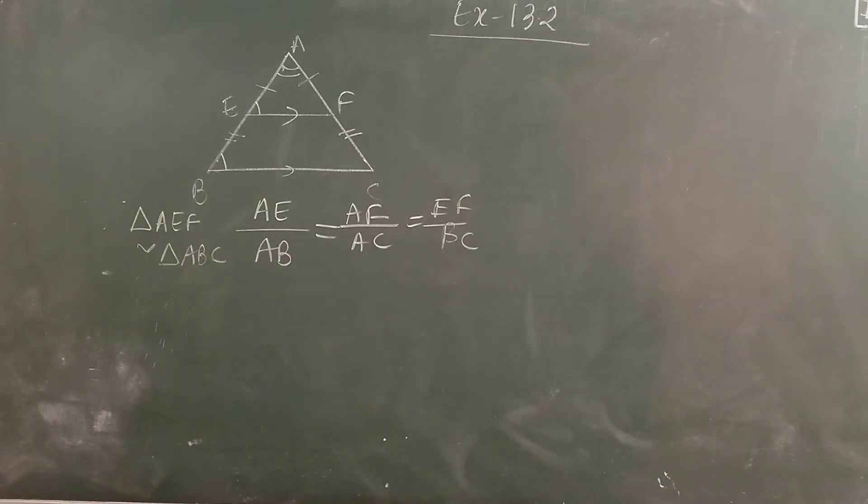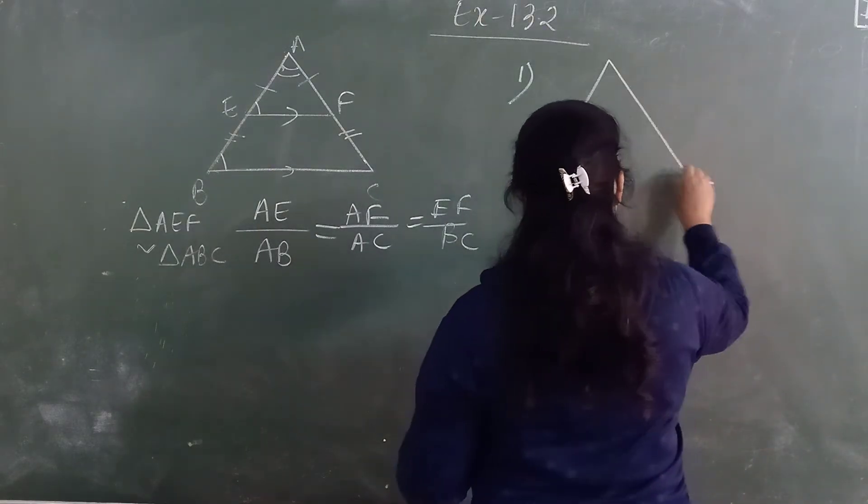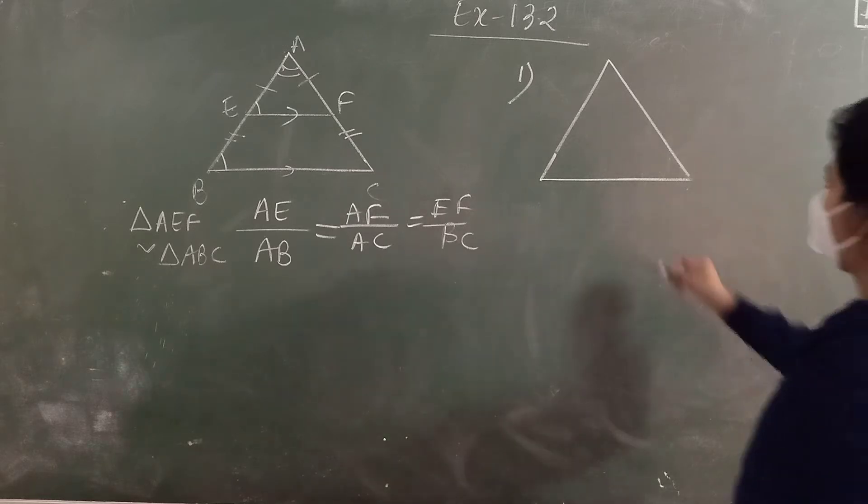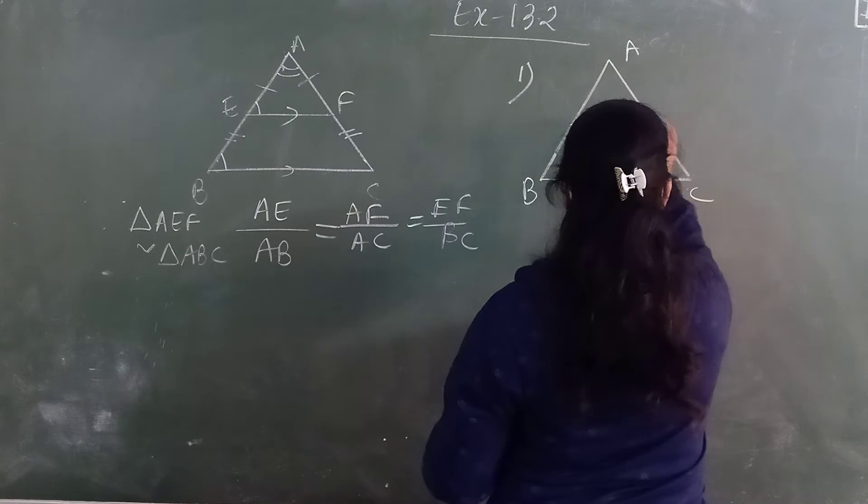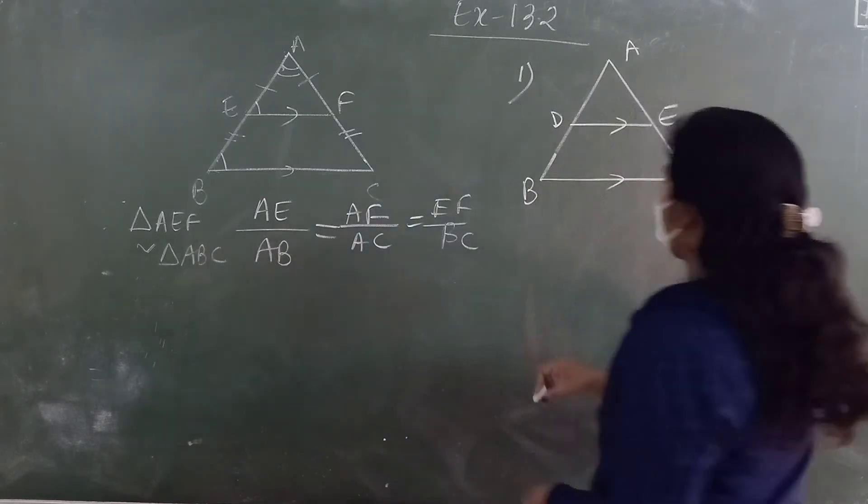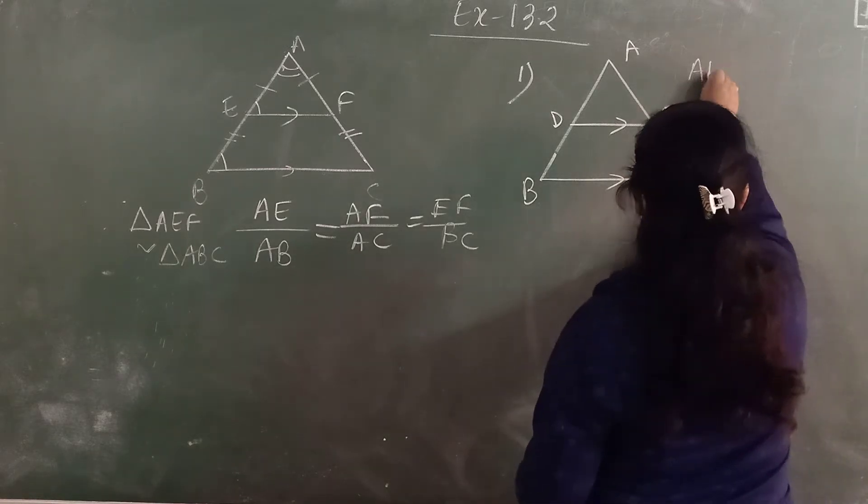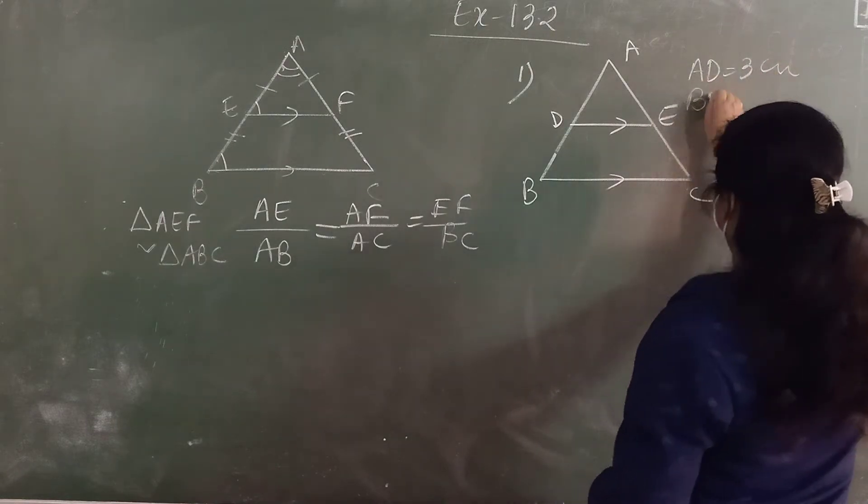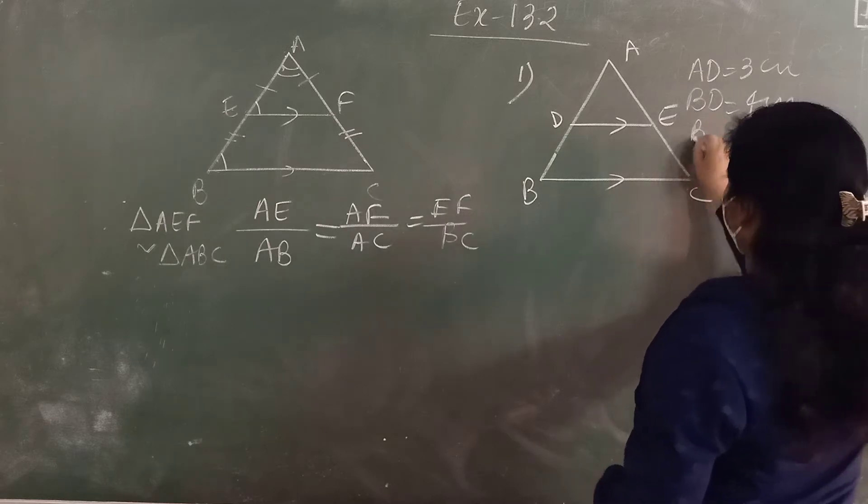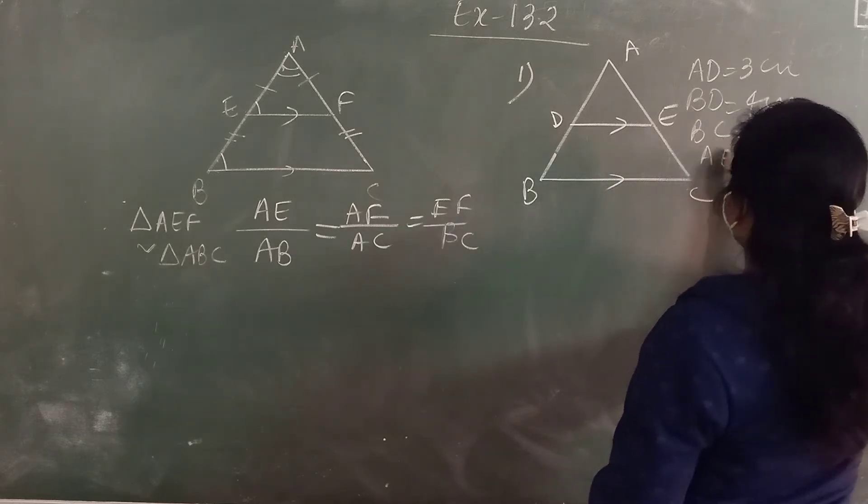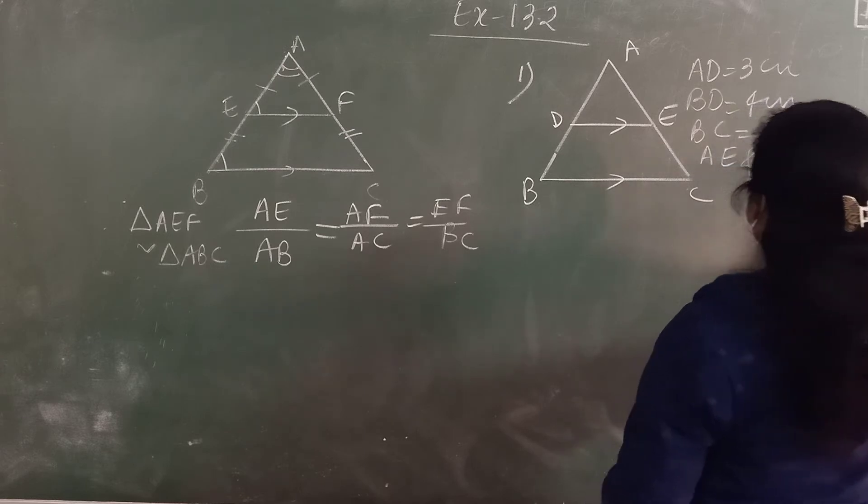We have first question. In which a triangle is given. We have this triangle A, B, C. This is D, E. These two sides are parallel. It is given in the question and it is given that AD is 3 centimeter. BD is 4. BD is 4 centimeter. BC is 5 centimeter. And AE ratio BC. These two sides we have to get. Apply the similarity condition.